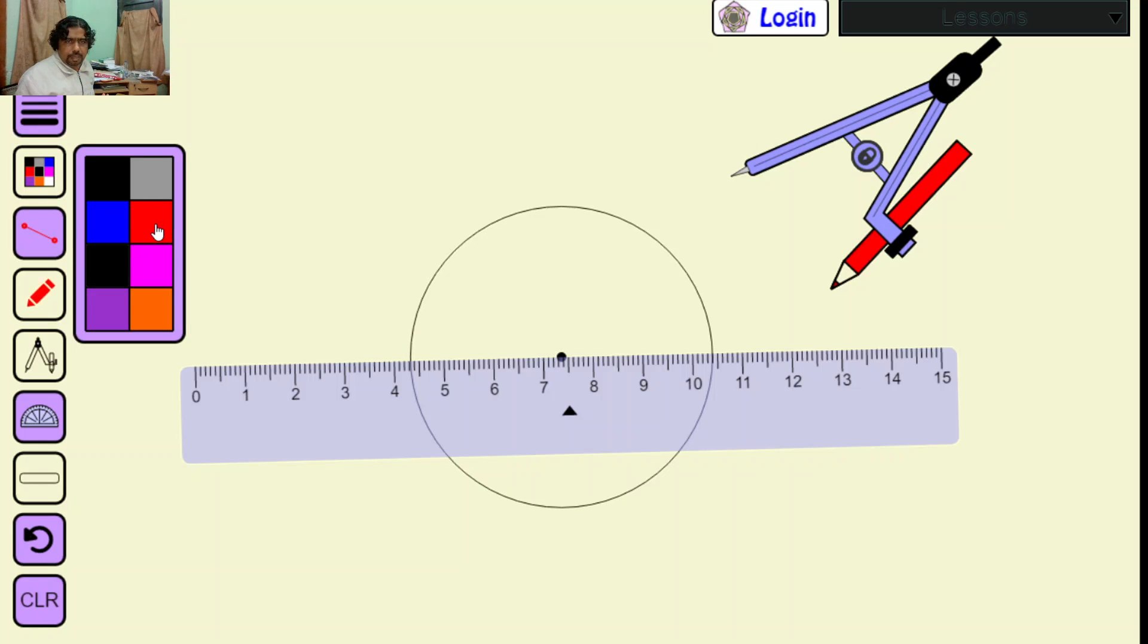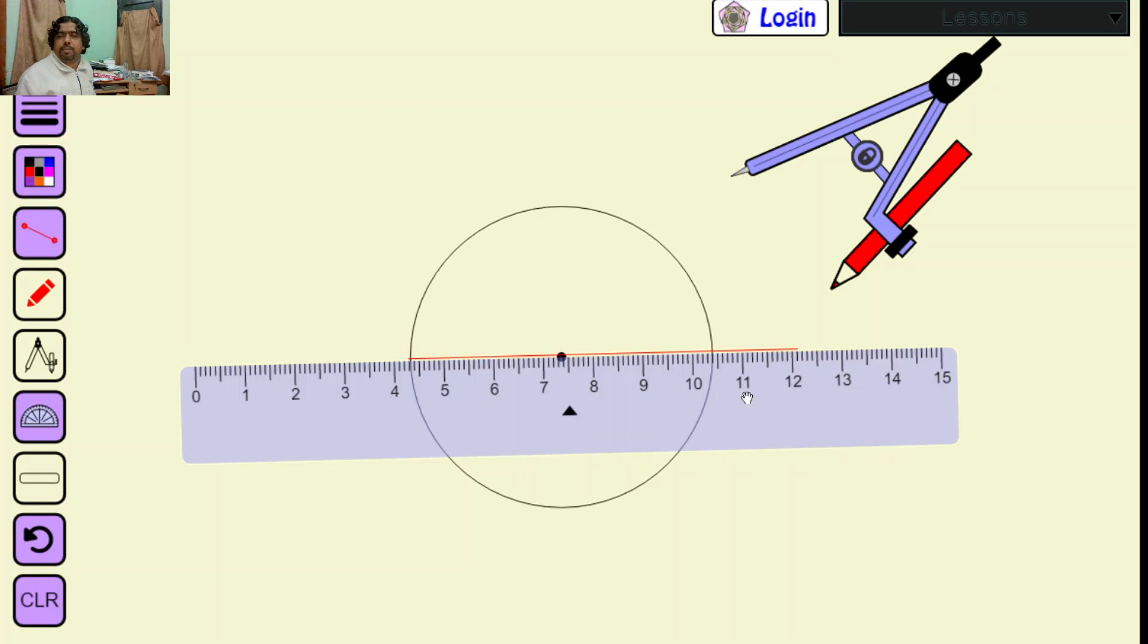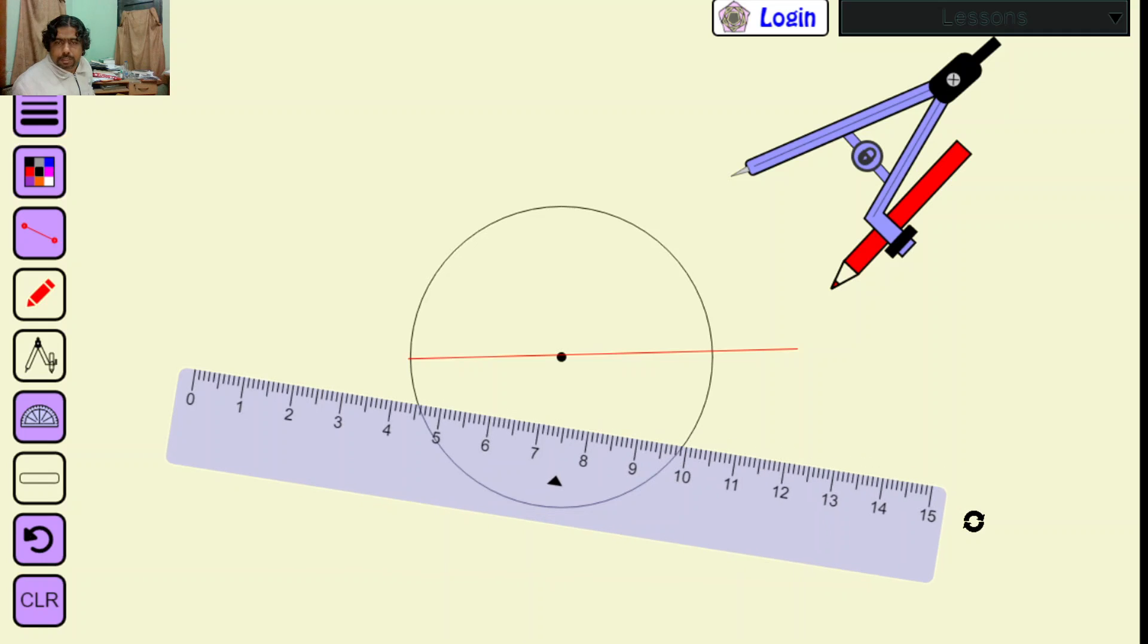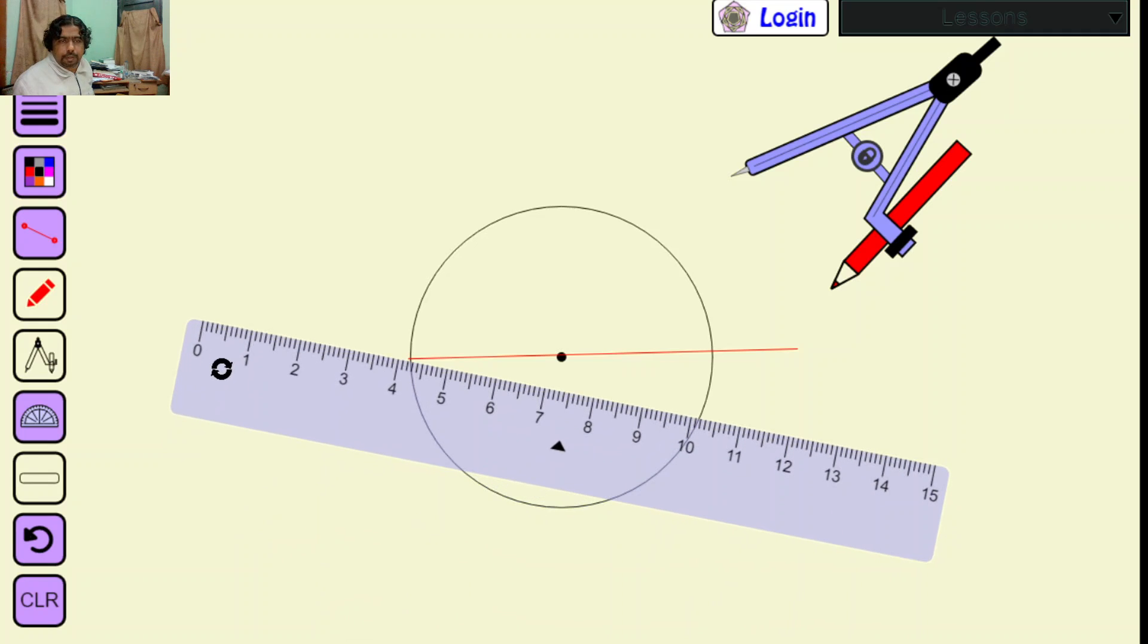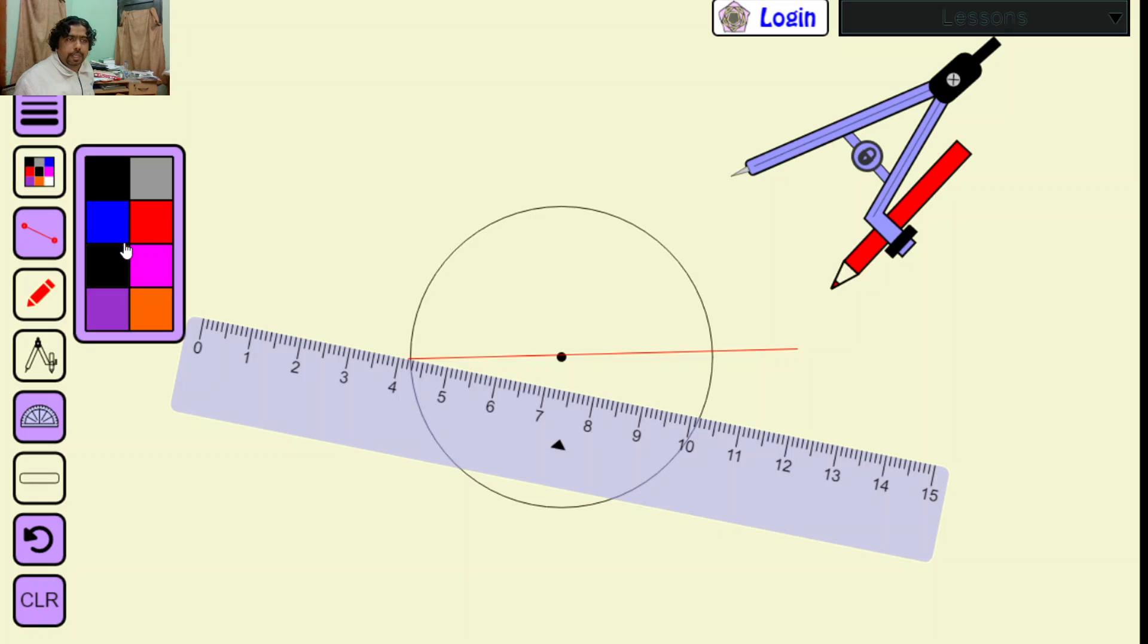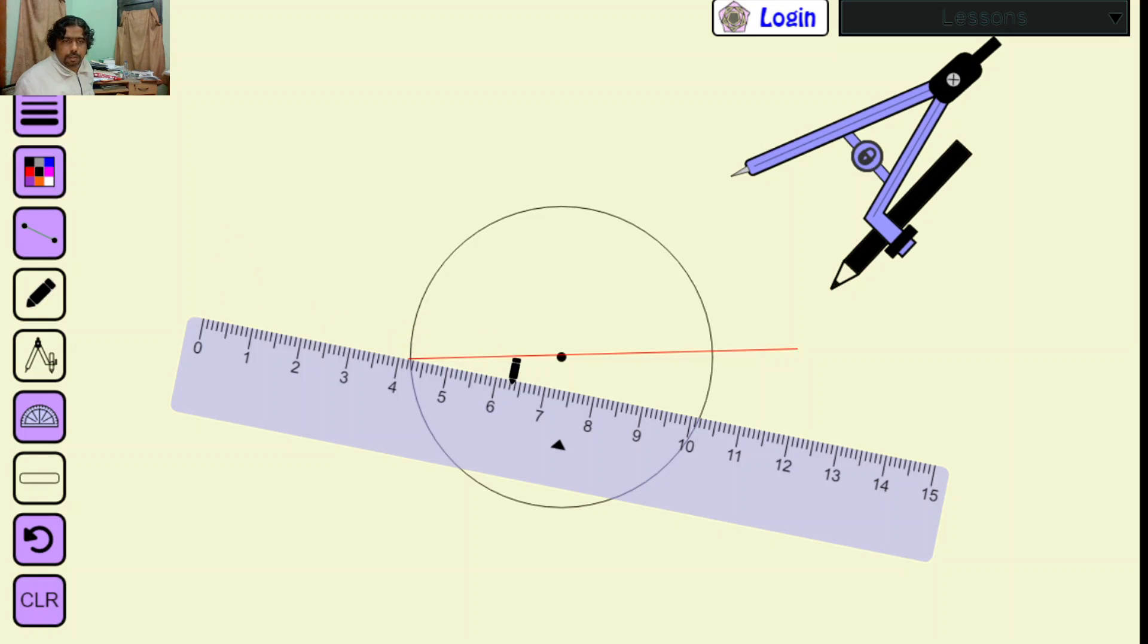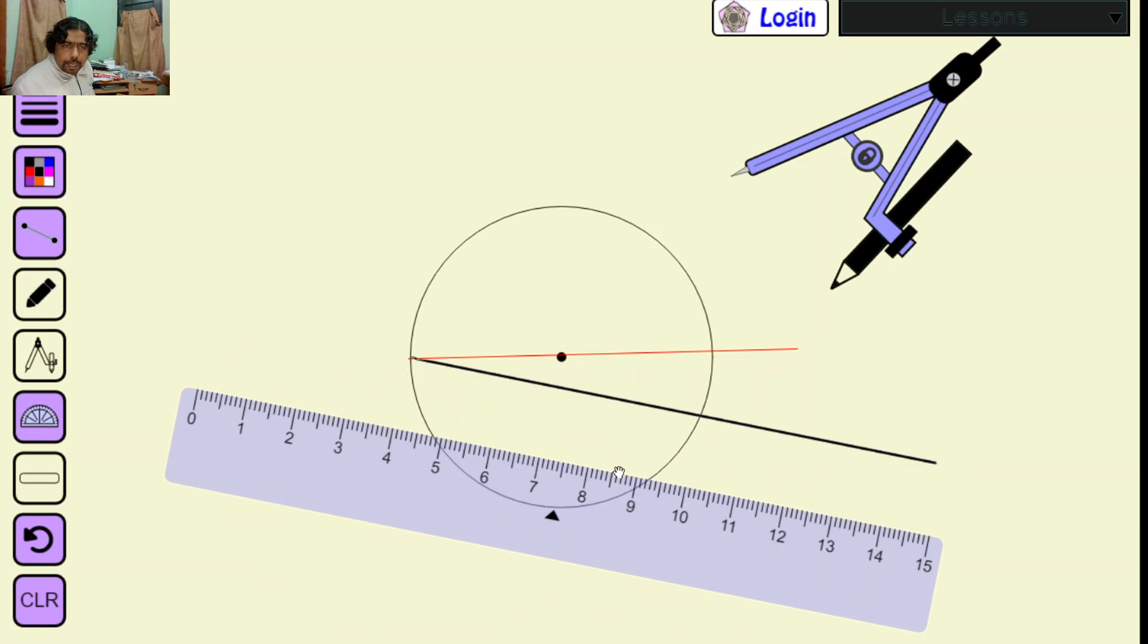Mark the diameter. Now divide this diameter into equal number depending on what polygon you want - pentagon, hexagon, or whatever. To divide it, you have to draw an inclined line. I am making this in green color.